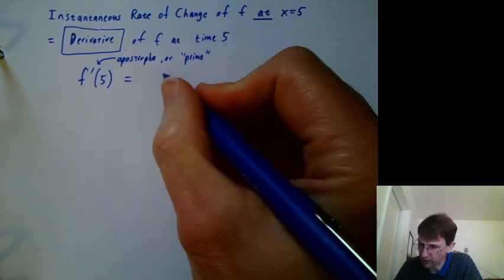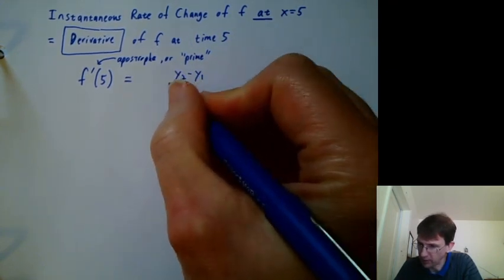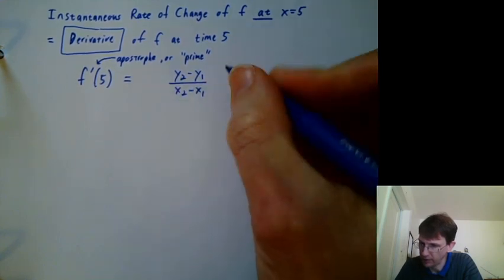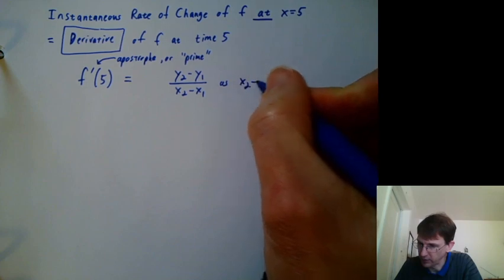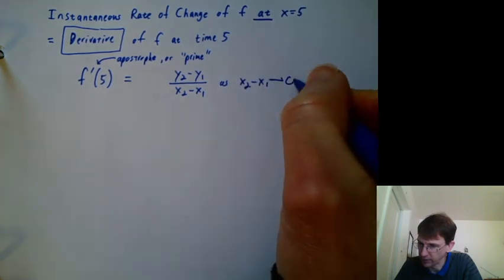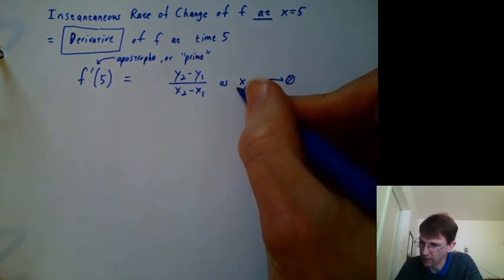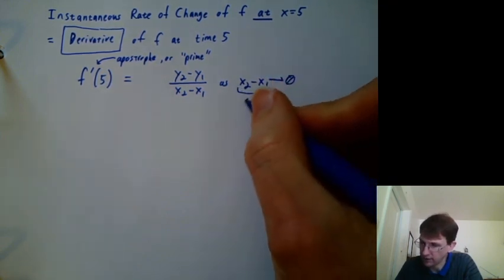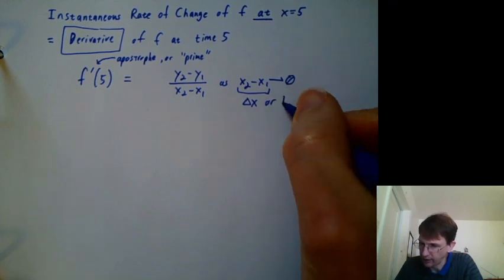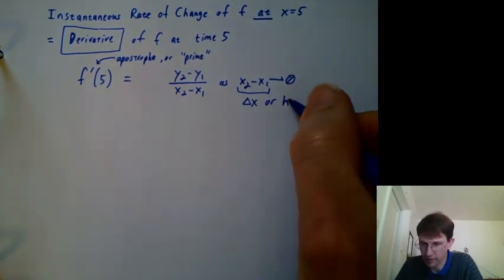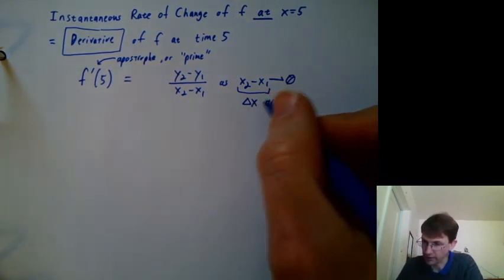And we've talked about like y2 minus y1 over x2 minus x1. And we want to do that as x2 minus x1 gets smaller and smaller, goes to 0. Another term for x2 minus x1 is delta x. And another term for delta x is h. I'm not sure who invented the idea of calling it h, but h is at least easier to write than delta x.